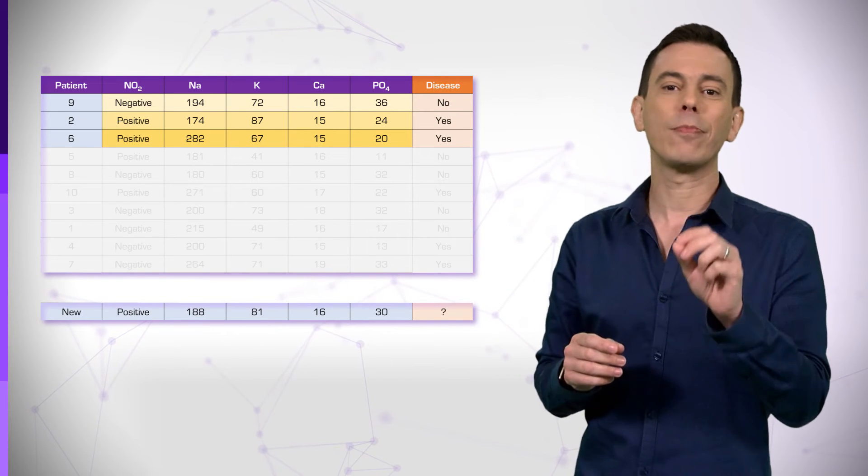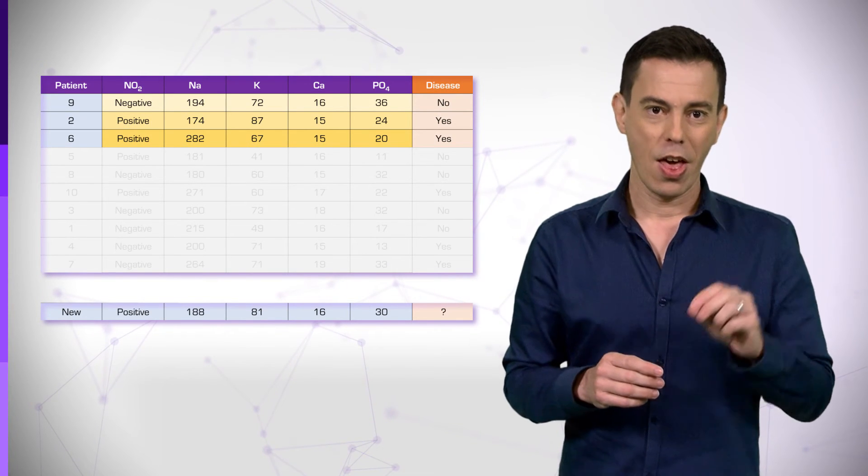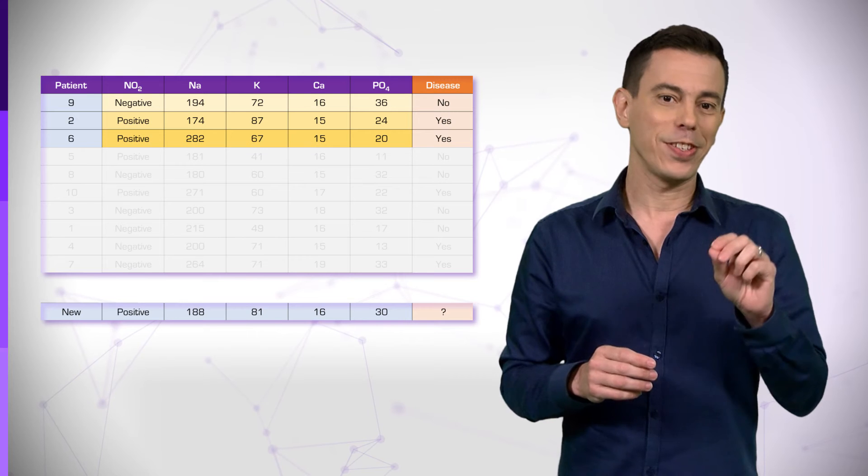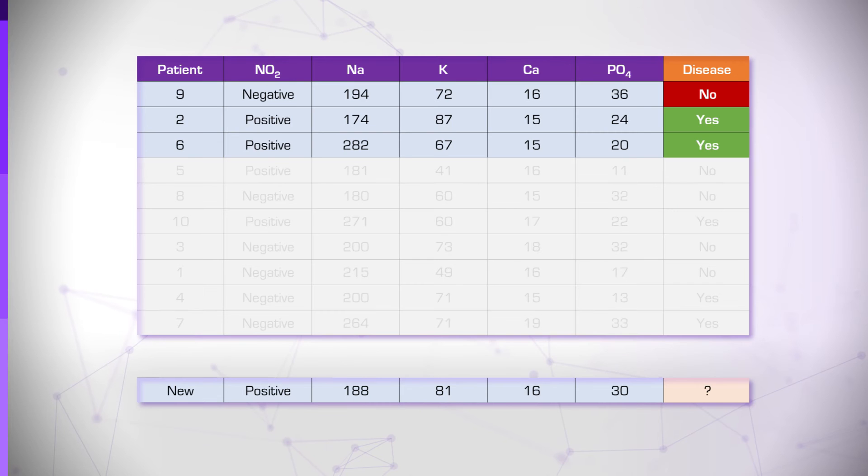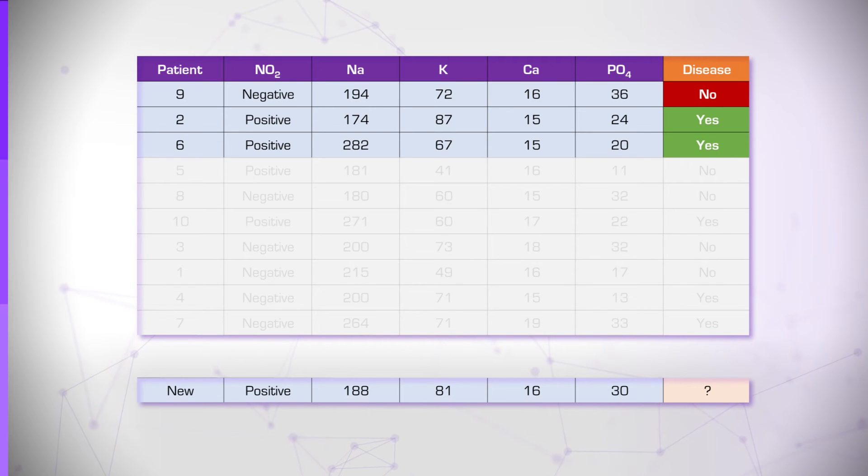And here comes the fun part. The 3 nearest neighbors are patients 6, 2, and 9. 6 and 2 have a kidney disease and 9 doesn't. So we can take a majority vote and establish that our new patient also has a kidney disease. Bad news.